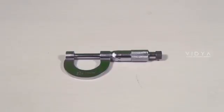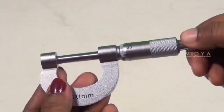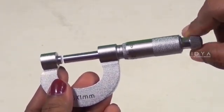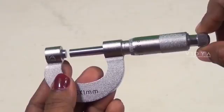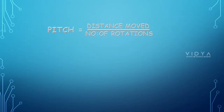First, to find the screw gauge's pitch and least count, rotate the screw gauge backward and note the distance moved in pitch scale, that is 4 mm. Now, pitch is given by distance moved divided by number of rotations, that is 4 by 4 equal to 1 mm.